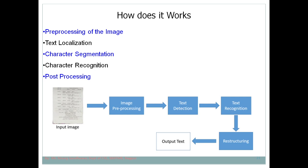Once an input image is provided, image processing is performed first. Most captured images are not in an appropriate format — they may be noisy. Image processing improves the quality of the image so that text can be extracted more easily. This involves various operations including noise removal and elimination of unnecessary data, making the image suitable for further processing.